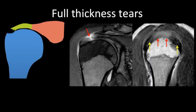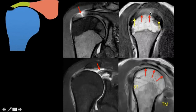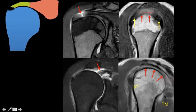Now we'll discuss full thickness tears. In one patient the enthesis is intact but there is a full thickness tear in the critical zone of the supraspinatus tendon with minimal retraction; the anterior-posterior dimension is noted on the sagittal image. In contrast, another patient has a full thickness tear from the enthesis with the tendon retracted almost to the glenohumeral joint; on the sagittal image the entire supraspinatus and infraspinatus tendons are not visualized, only the teres minor tendon remains. The anterior-posterior dimension of the tear must be measured and reported.